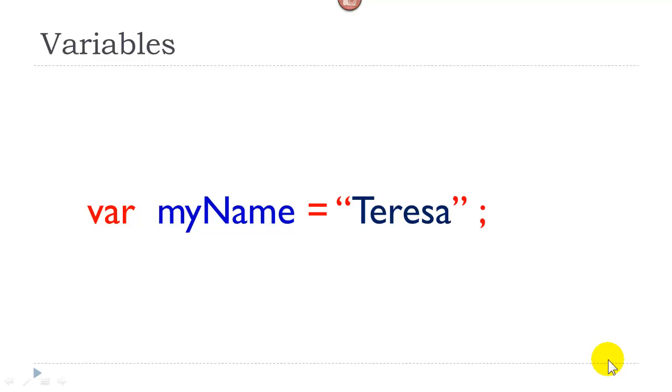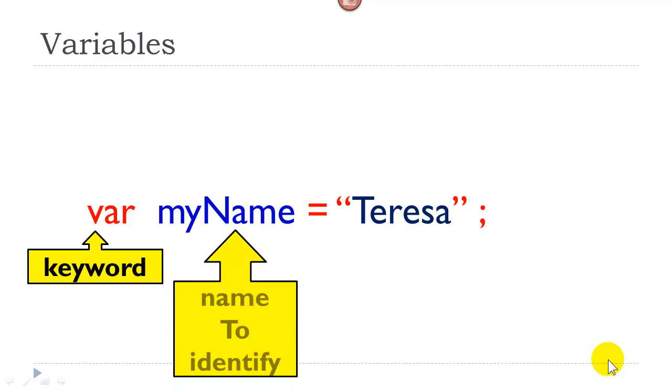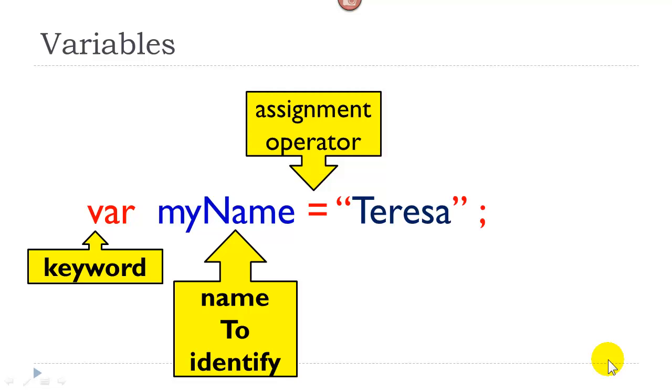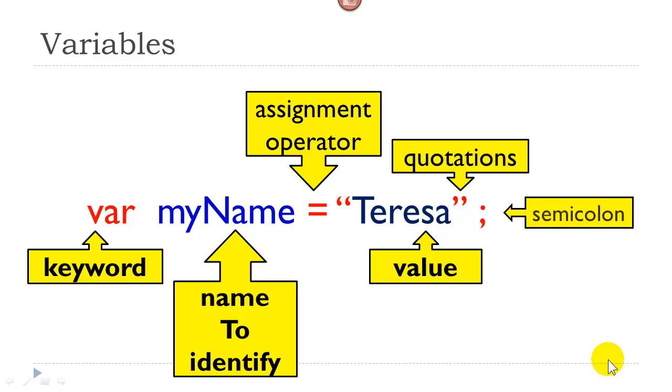In this example, var myName equals Teresa, we have the var keyword, the name to identify that variable, the assignment operator which is the equal sign, the value that I have given to be stored in that variable. Notice that the value is enclosed in quotation marks because it is a text literal, and our JavaScript statement always ends with a semicolon.